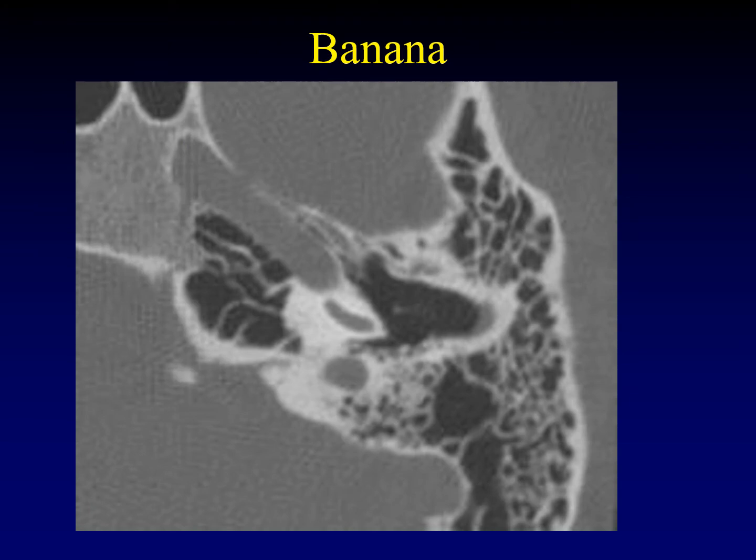When we evaluate the otic capsule, there are a couple of important reference points. On axial images, you can't catch the whole cochlea at once. So you've got to have a couple of different reference points, and thankfully they all have food analogies.